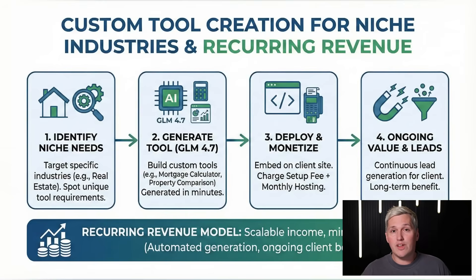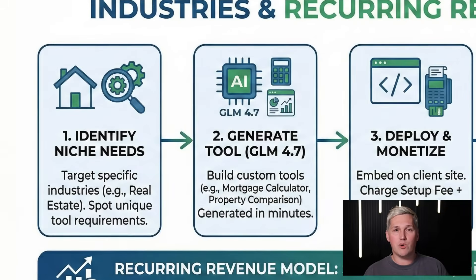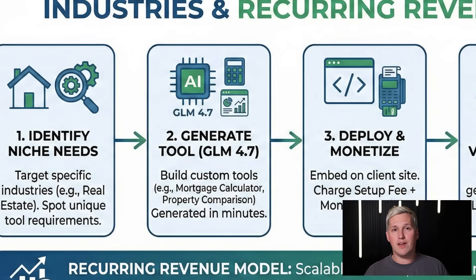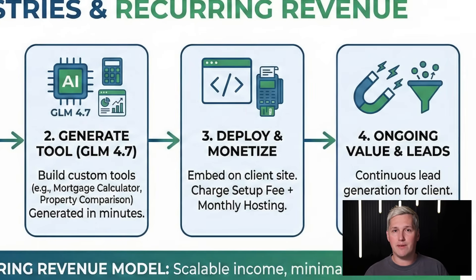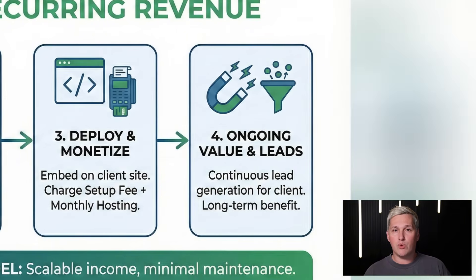Second angle: custom tool creation for niche industries. Say you are working with real estate agents — you use GLM 4.7 to build a mortgage calculator or a property comparison tool they can embed on their site. You charge a flat setup fee plus monthly hosting. The tool is generated in minutes, but the value to them is ongoing lead generation.